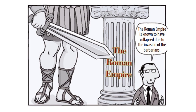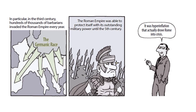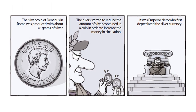The Roman Empire is known to have collapsed due to the invasion of the barbarians. In particular, in the 3rd century, hundreds of thousands of barbarians invaded the Roman Empire every year. But it was hyperinflation that actually drove Rome into crisis. The silver coin, the denarius, was produced with about 3.8 grams of silver, but the rulers started to reduce the amount of silver in each coin in order to increase the money in circulation.